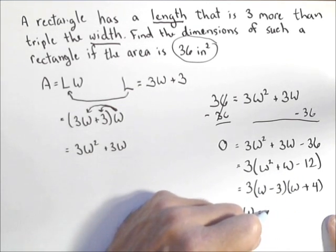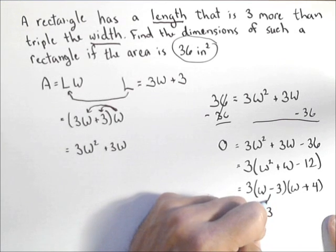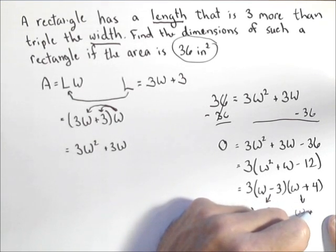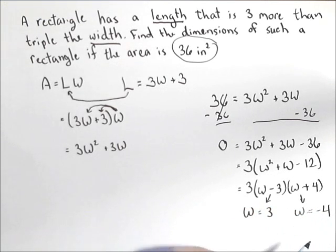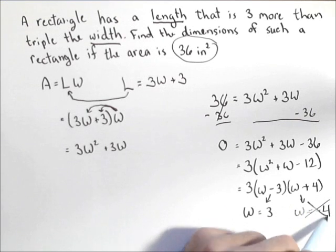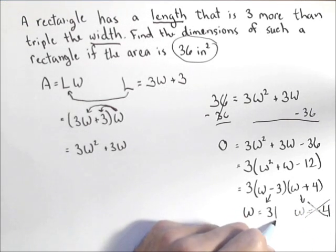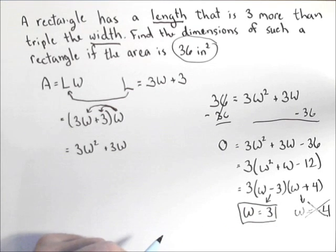So we get W equals three from this one. And from here we get W equals negative four. Now it doesn't make any sense to have a negative width. So we're going to get rid of that answer. And W equals three is part of our answer.